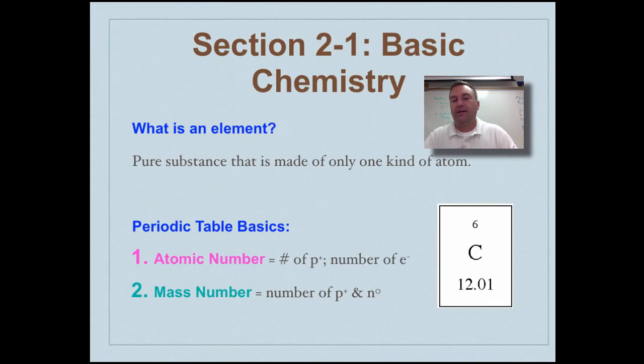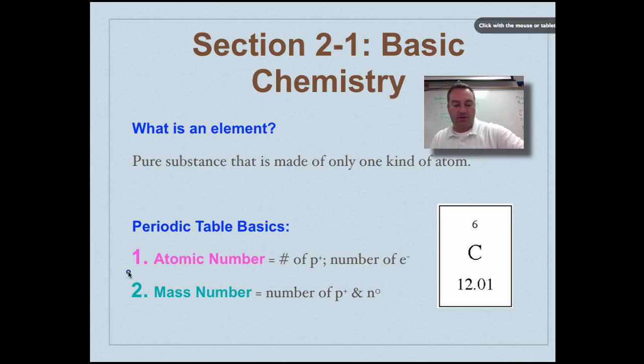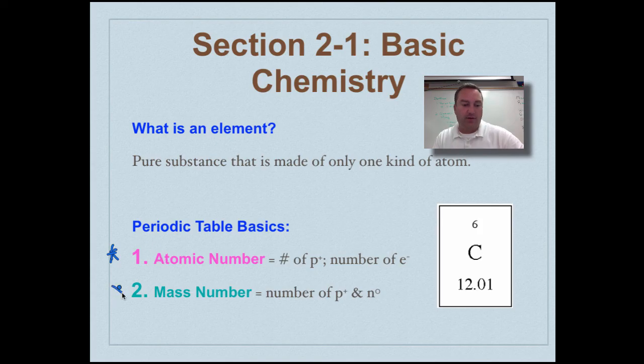So what is an element? An element is simply one type of atom. And an element is based upon the atomic number. So these are periodic table basics and I want to make sure that you understand these. Make a little note - you notice that they're color coded, that means that they're important.